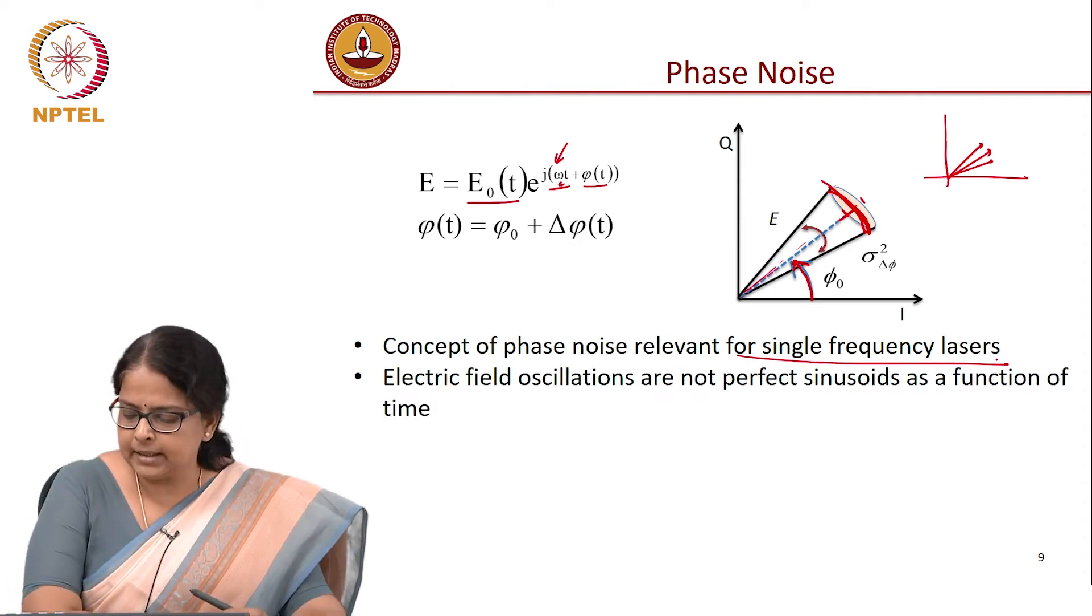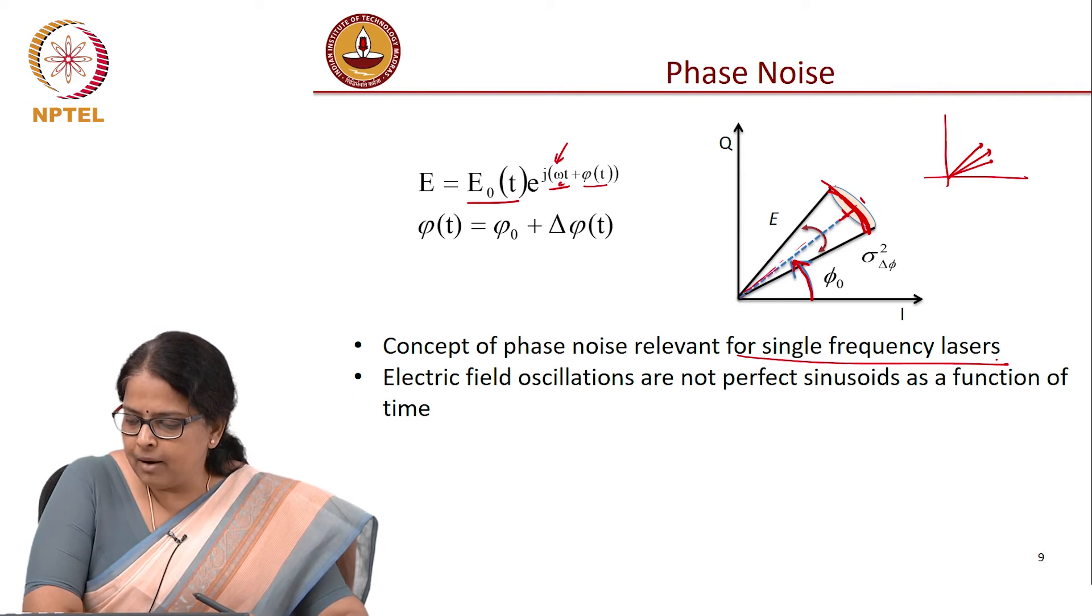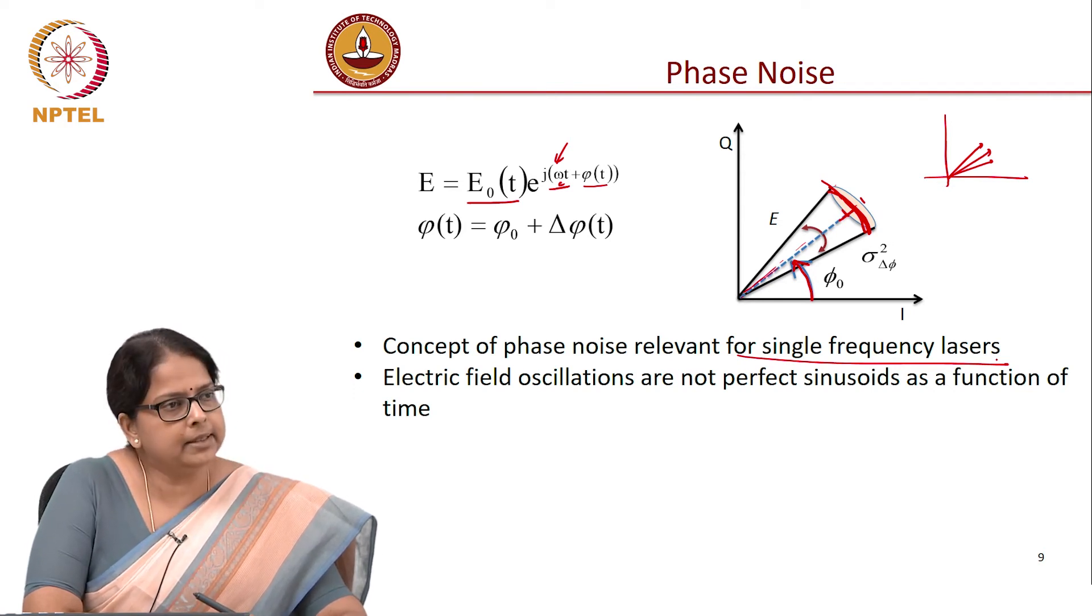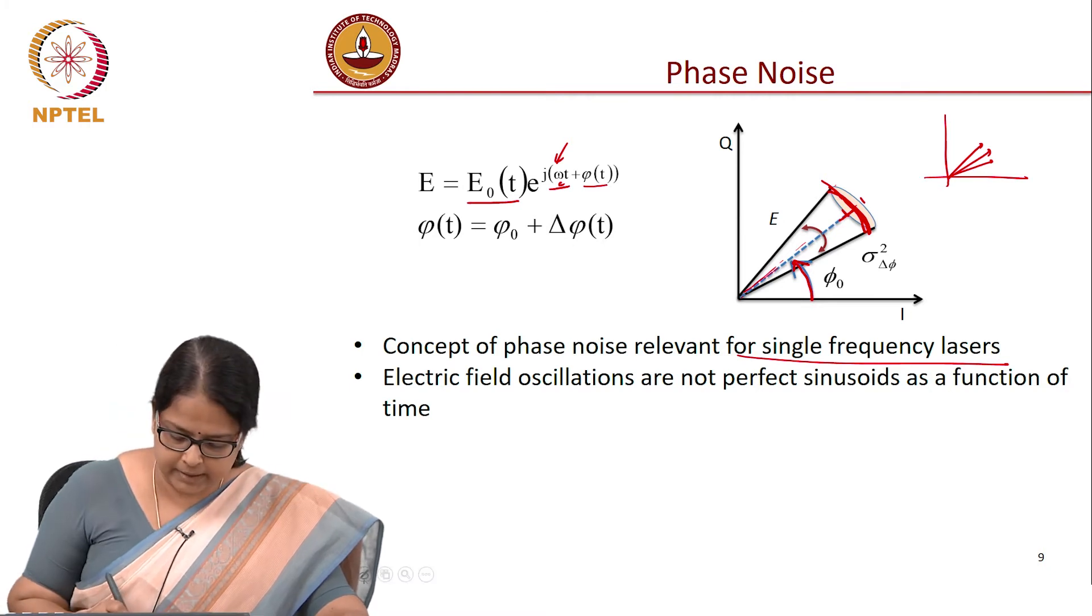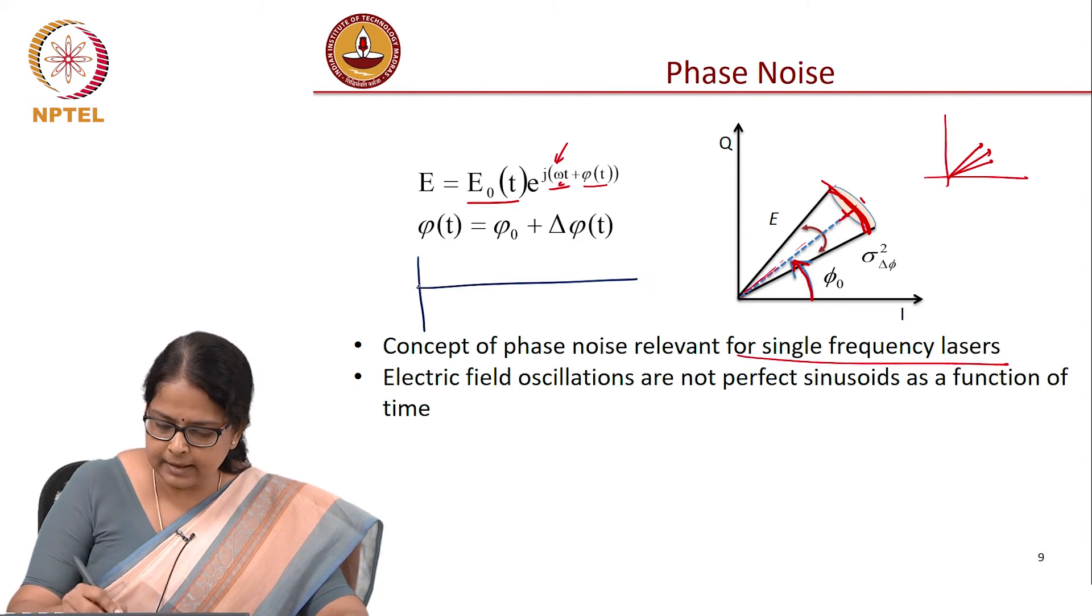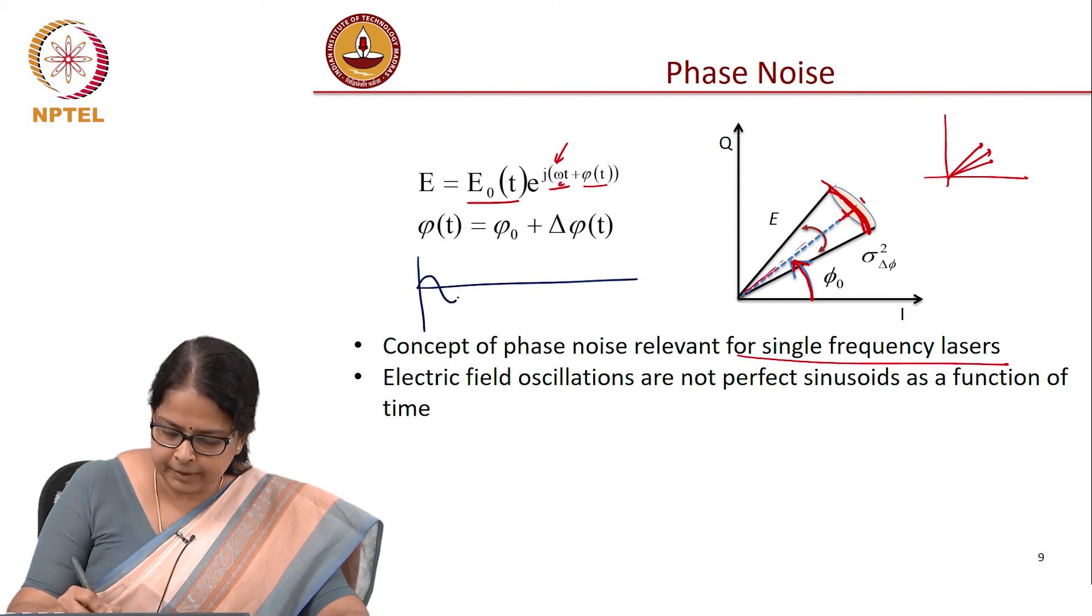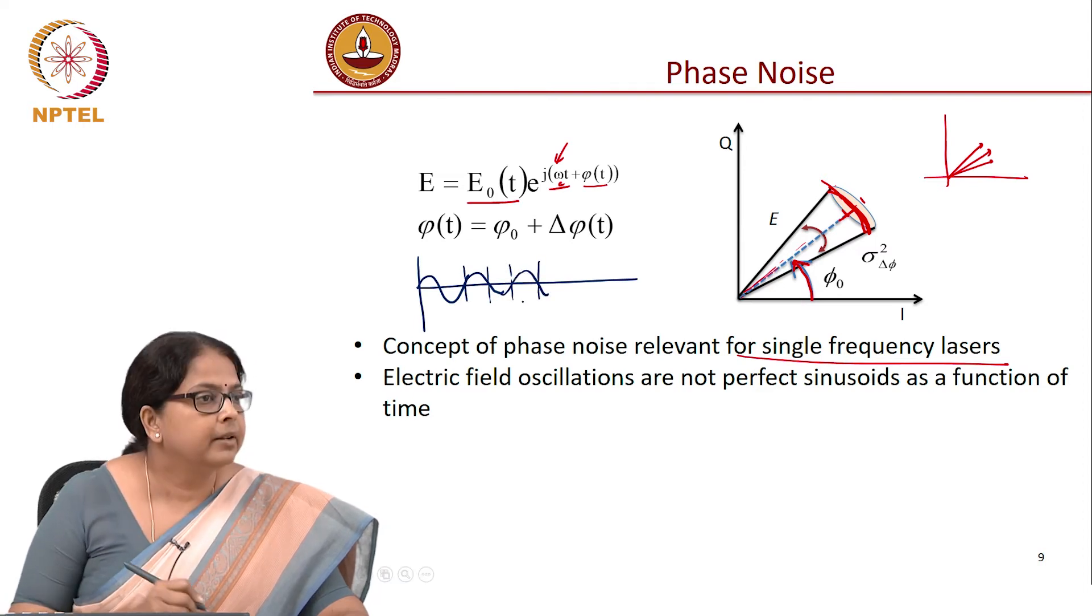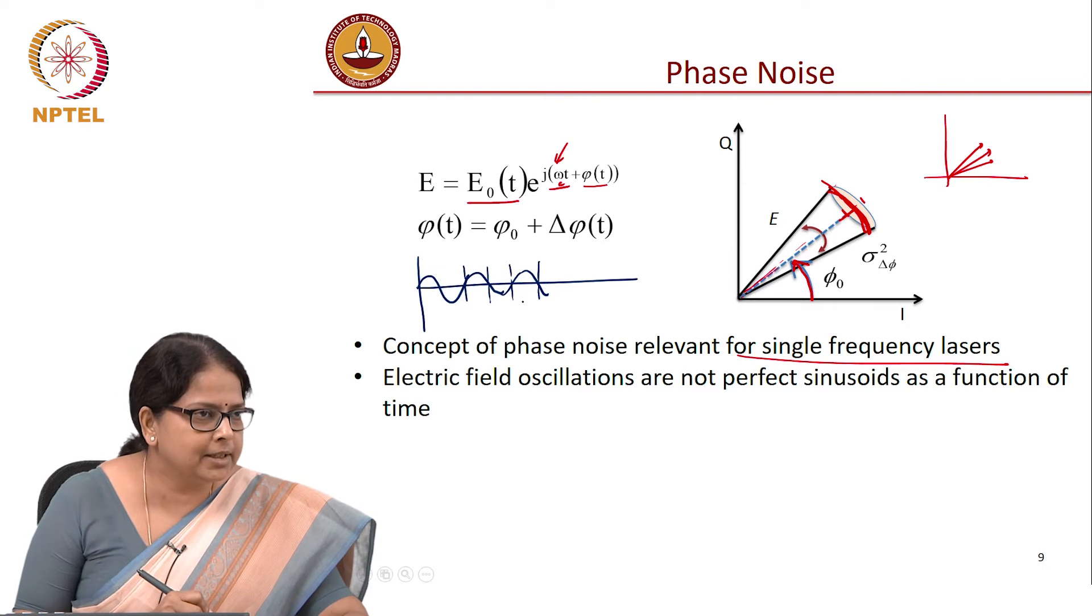The next thing is, what is this phase noise? It means that the field oscillations are not perfect sinusoids. A way of representing this imperfection in the sinusoid. The sinusoid is also this. Let us say this sinusoid is supposed to cross the 0 at specific time instances.